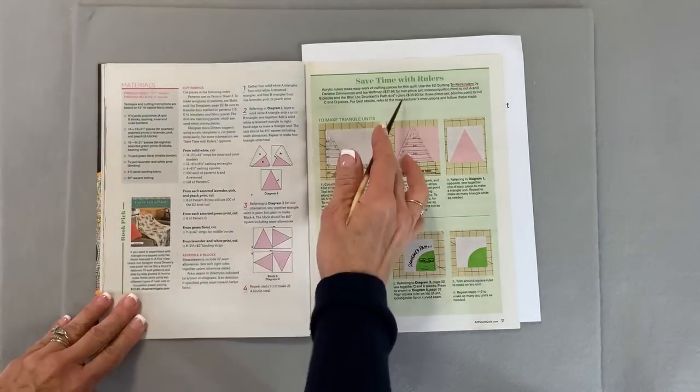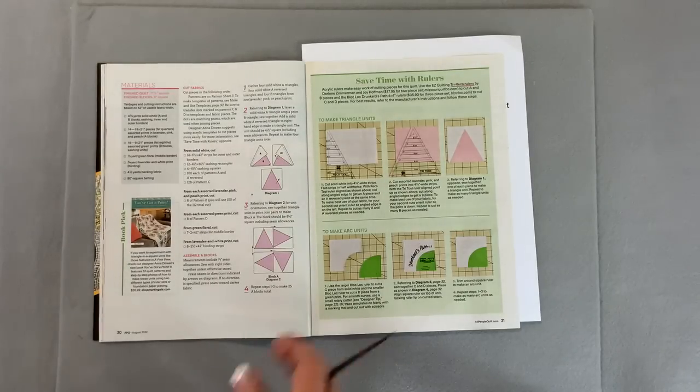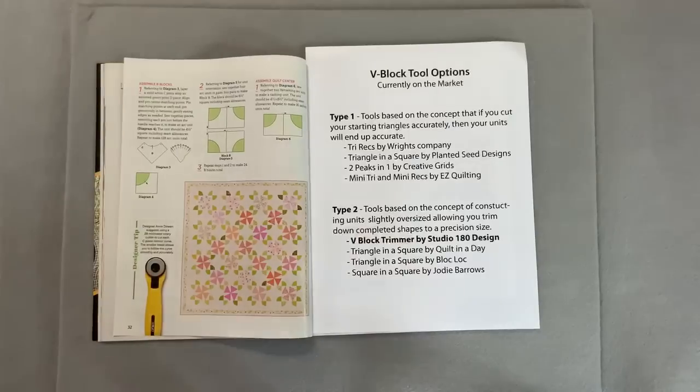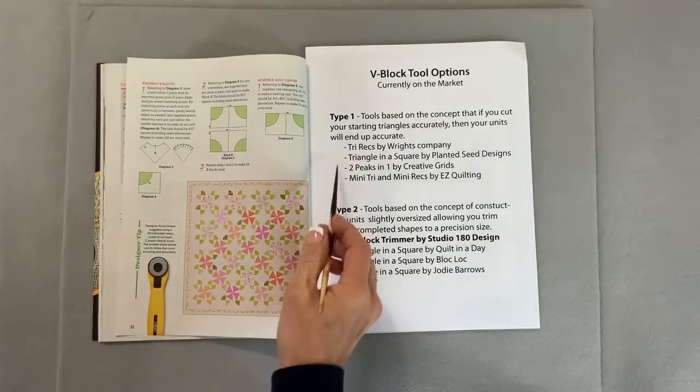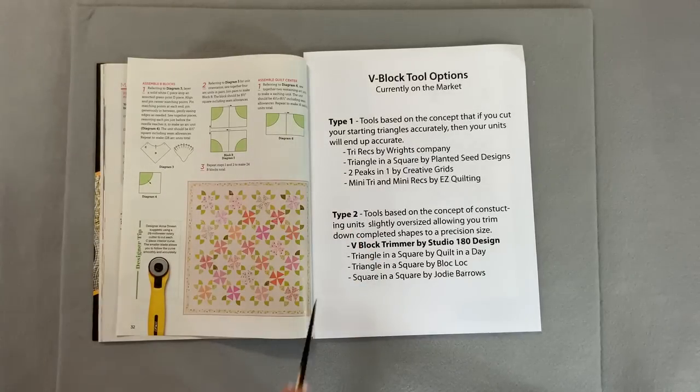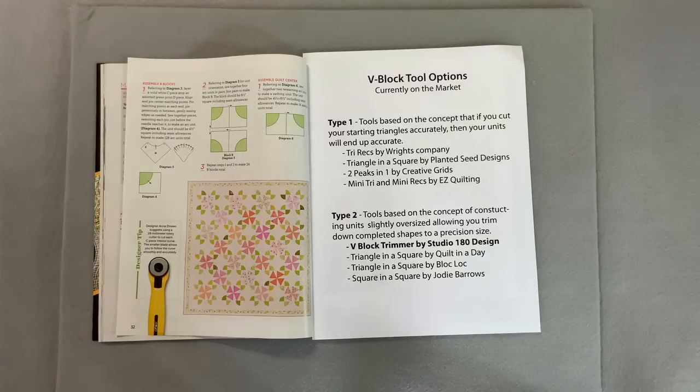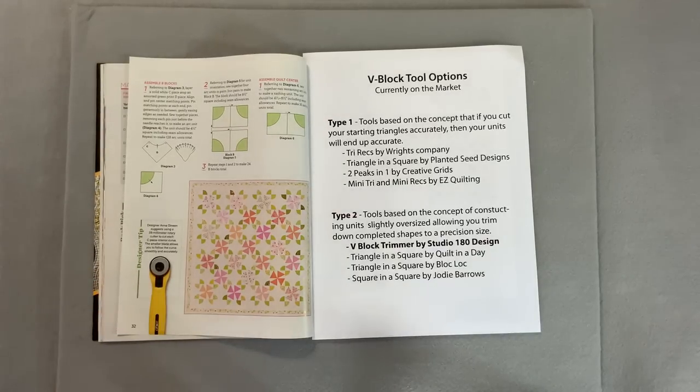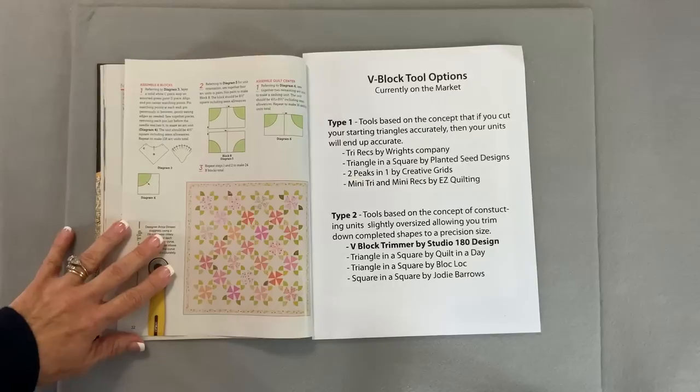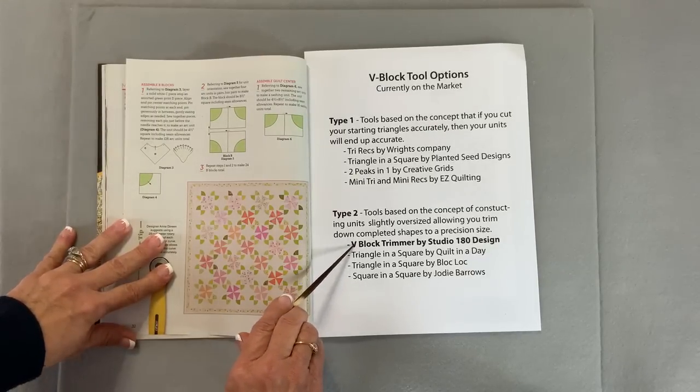Occasionally, a magazine will actually recommend that you use rulers. And there are a good number of rulers that are out there on the market. Some of those rulers fall into two basic types. Type 1, which are tools that were developed with the concept that if you cut those triangle shapes that you're building your unit with precise, then the units themselves are going to be precise. And there are a number of tools out there on the market that follow that concept. And then, there's a second type of tool, which follows the concept that I like to pursue, which is to cut those triangles to build your units slightly oversized, so that your unit is oversized, so you get to trim them down and clean them up, so that once your units are sewn and pressed, you do get high precision. And the V-Block is one of those tools.